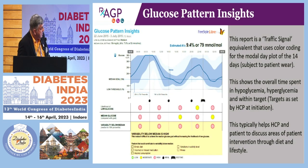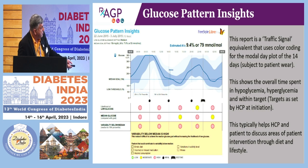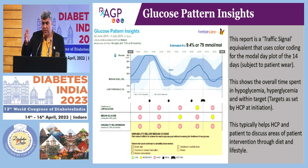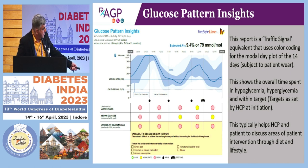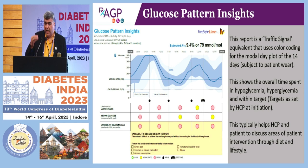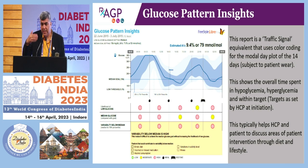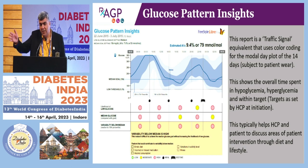When you talk about pattern insights, this is called the traffic signal — that's the second report. It talks about the probability of low glucose: green is low, yellow is moderate, and pink is high, telling us at what time of the day. The graph is divided into six-hour quartiles — 12 to 6, 6 to 12 — showing the probability of low sugar and variability. It's one of those reports people don't spend much time on, but it's actually interesting. I often say: start looking at the AGP, start with the median, and then look at other aspects.